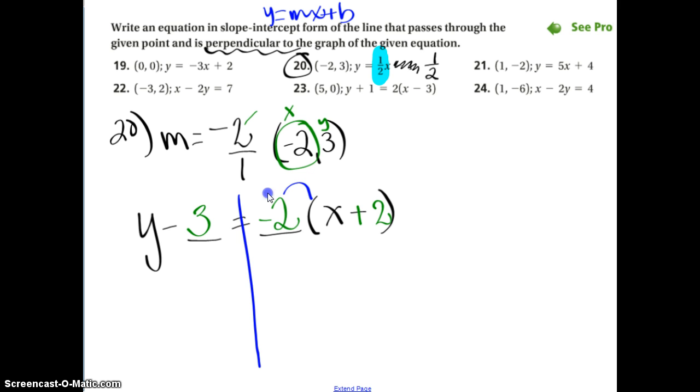So, I multiply it through. Get negative 2x minus 4. y minus 3. Almost done. What's my last thing? Got it. Plus 3. Plus 3. So, y equals negative 2x minus 1.